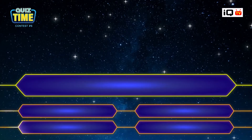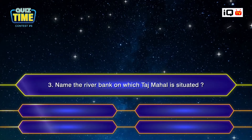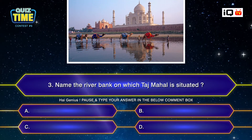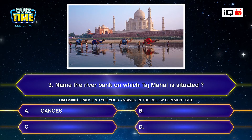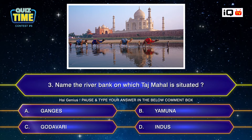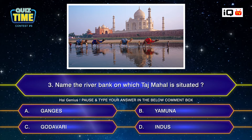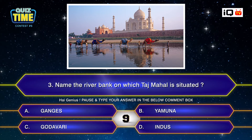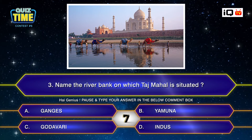Number three: Name the river bank on which the Taj Mahal is situated. A. Ganges, B. Yamuna, C. Godavari, D. Indus. Your time starts now. Type your answer down.